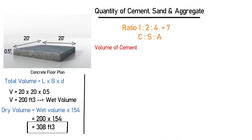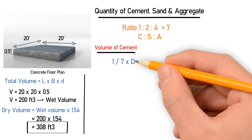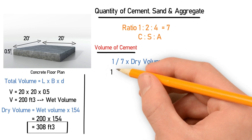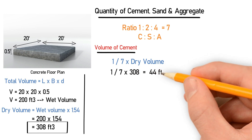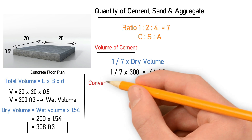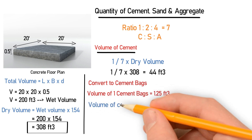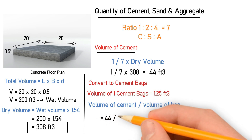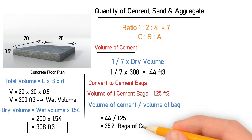For the volume of cement, we use the formula: (1 ÷ total ratio) × dry volume = (1 ÷ 7) × 308 = 44 cubic feet. To convert this into cement bags, the volume of one cement bag is 1.25 cubic feet. So, 44 ÷ 1.25 = 35.2 bags. This means 35.2 bags of cement will be required for this floor.